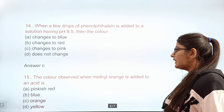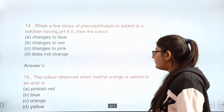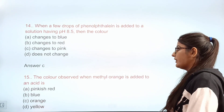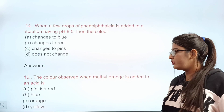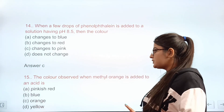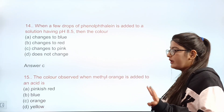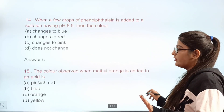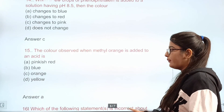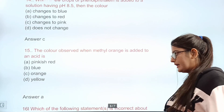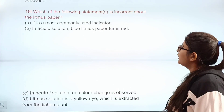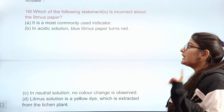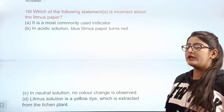Question 15: The color observed when methyl orange is added to an acid — options: red, pinkish red, blue, orange, yellow. Correct answer: A — pinkish red.